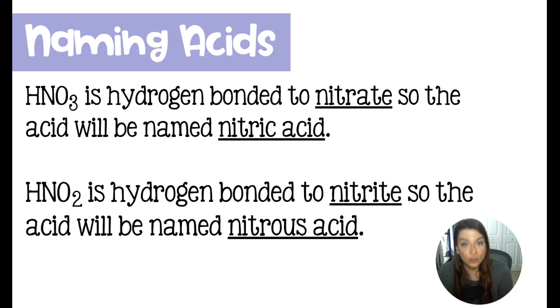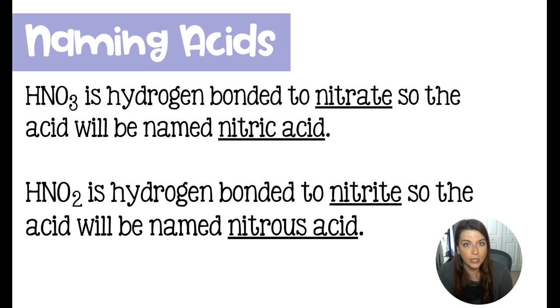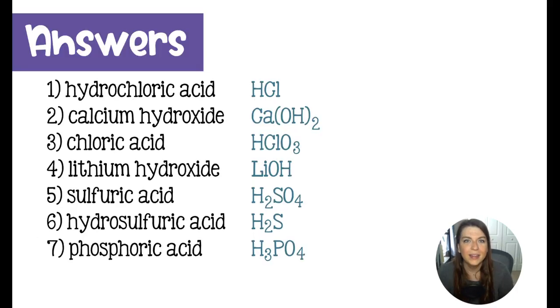If the poly's ending is '-ite', it is going to get a new ending: '-ous' (O-U-S). So HNO2 — NO2 is nitrite — the '-ite' is going to drop and you're going to put the '-ous' ending on it. So that would become nitrous acid.